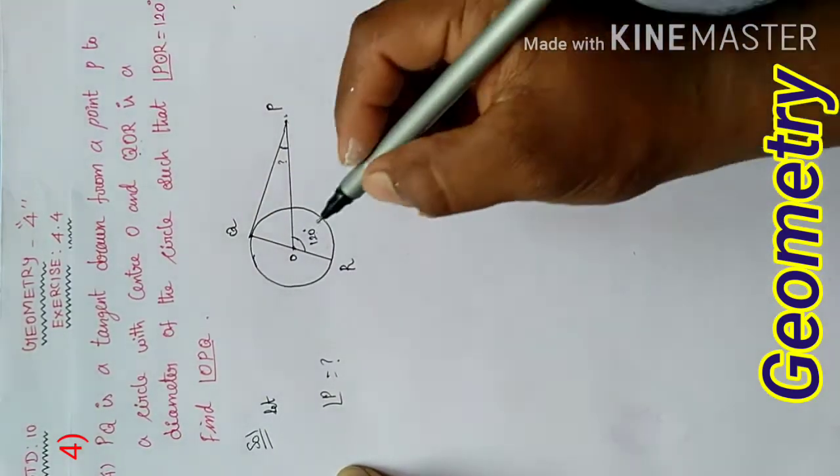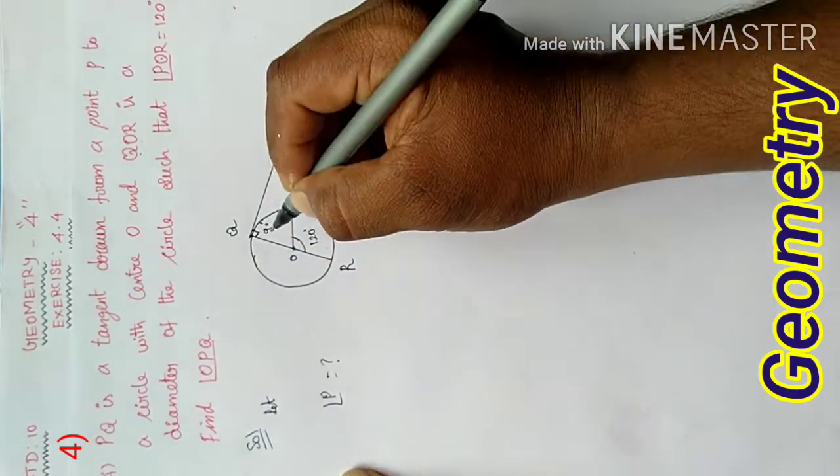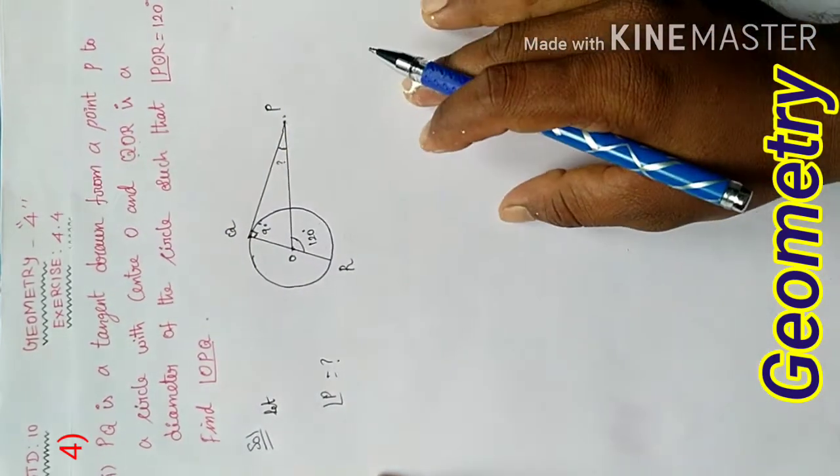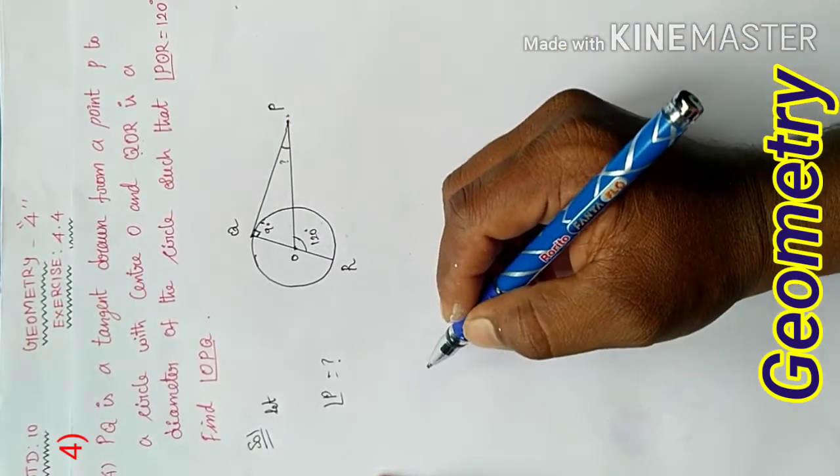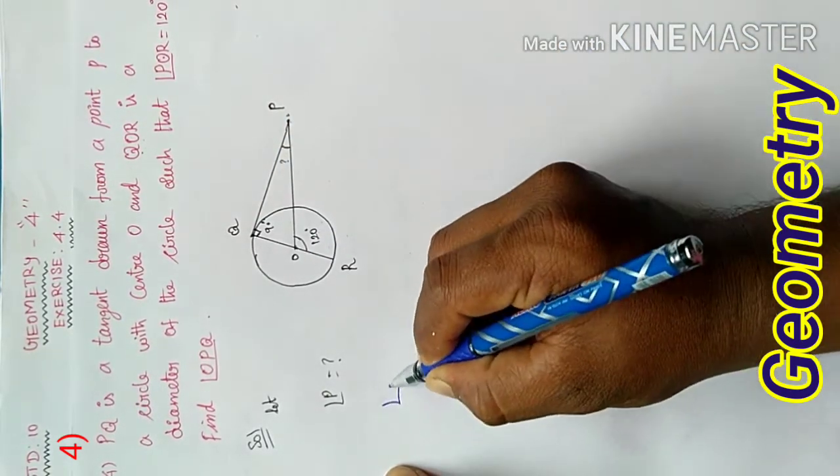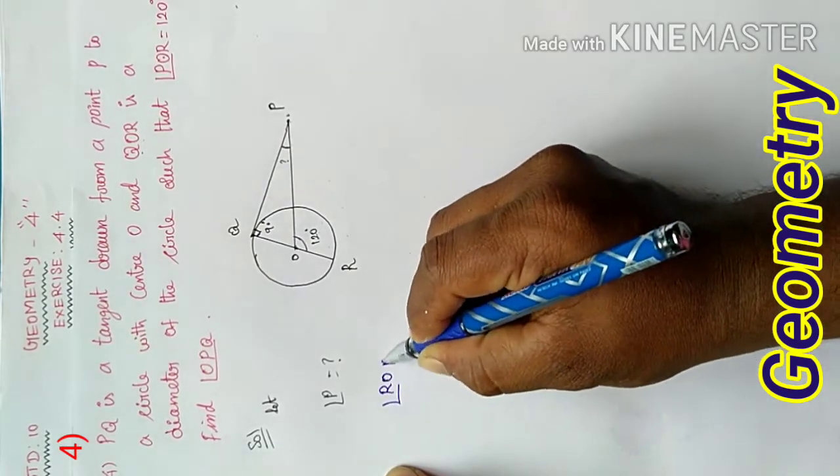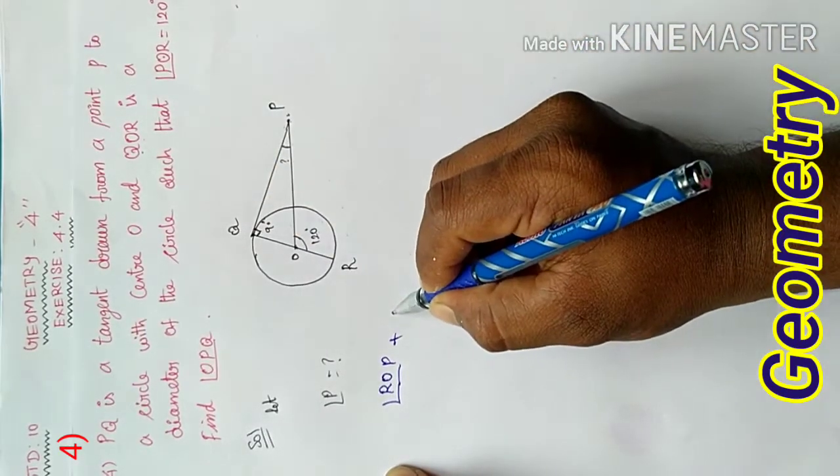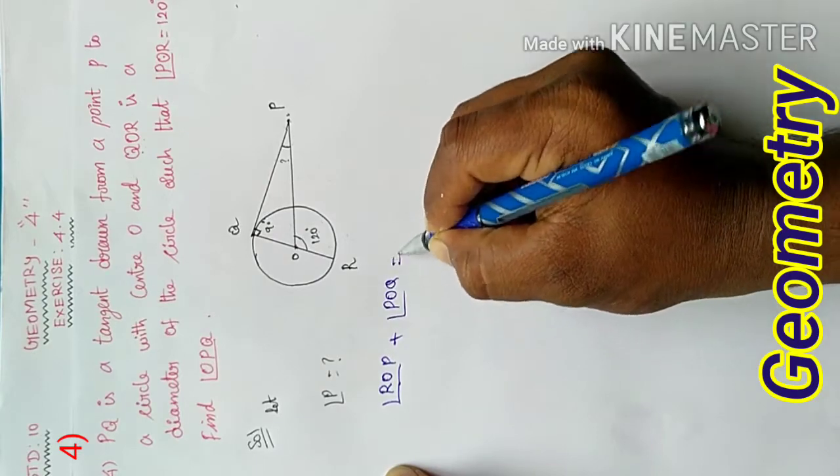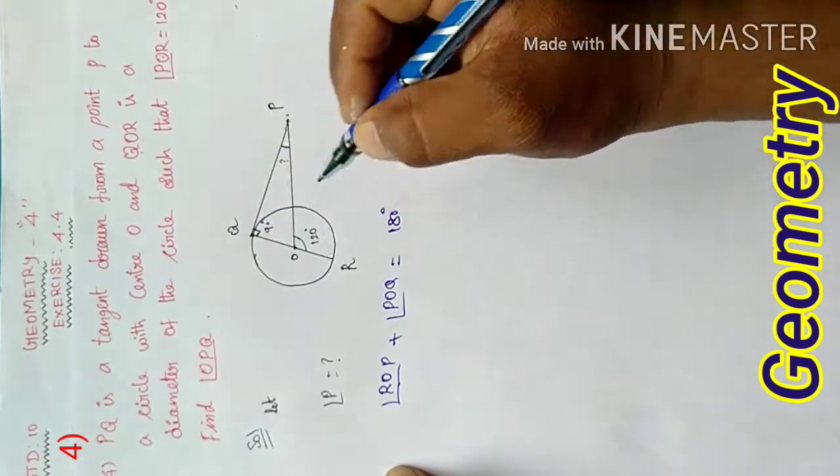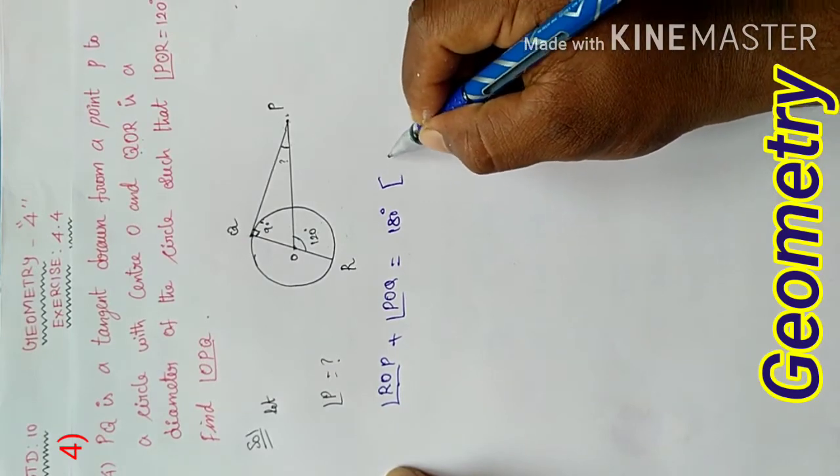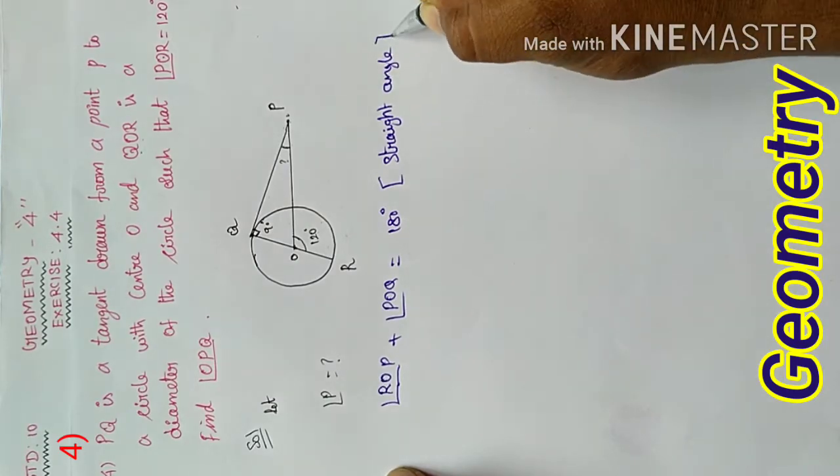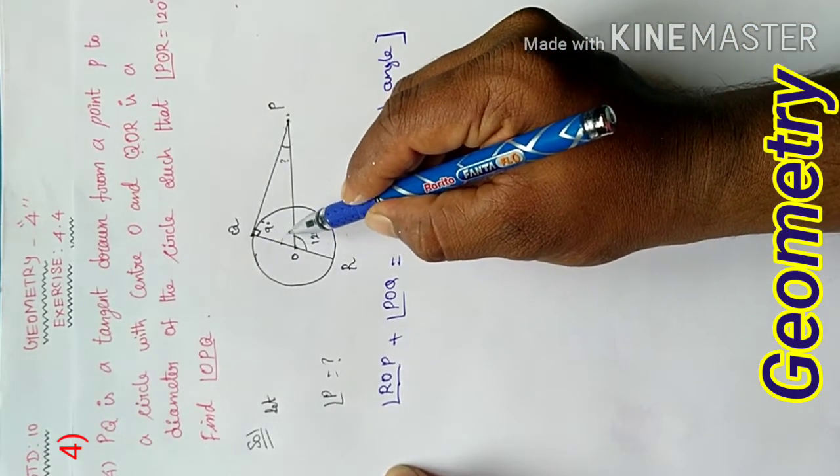Find the angle OPQ. So, for a tangent, this angle - the tangent makes an angle. The angles on a straight line equal 180 degrees.